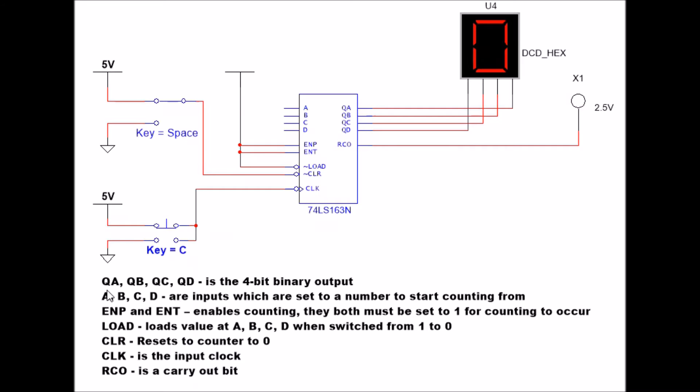So let's just go over the inputs and the outputs. QA, QB, QC, QD, these are the outputs, and here I have it going to this hex display. Keep in mind that QA, that's the ones place, so I have it going to the ones place of this display: the ones place, the twos place, the fours place, the eights place. This is binary, of course. These are my outputs.